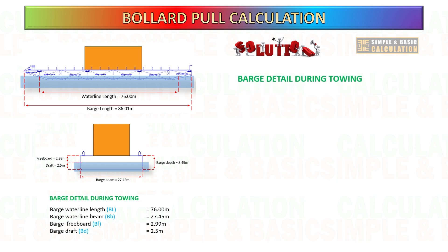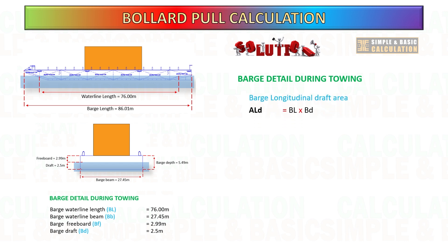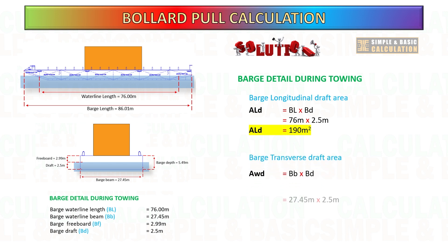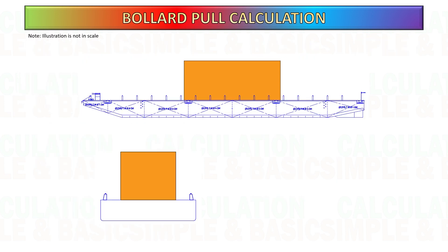Next, calculate the longitudinal and transverse draft area. Barge draft refers to the vertical distance between the waterline and the deepest point of the barge's hull. The draft is affected by factors such as the weight and distribution of cargo, ballast, and other loads on board. Multiply the barge waterline length by the barge draft to get the longitudinal draft area, and the same for transverse.